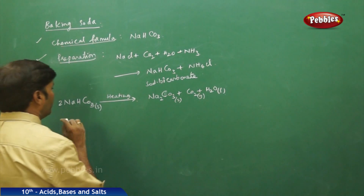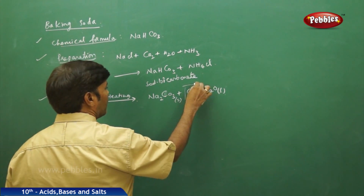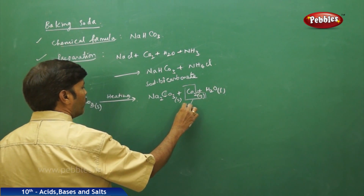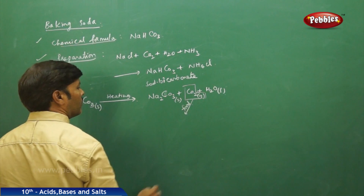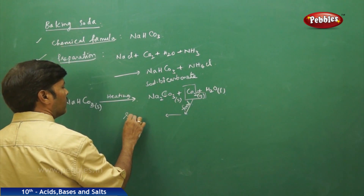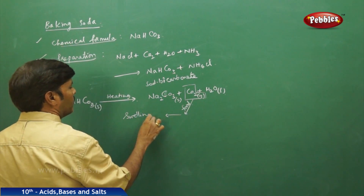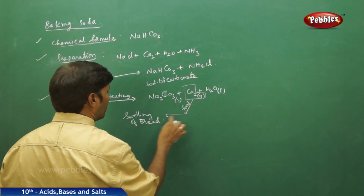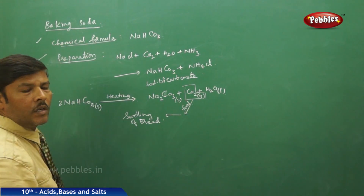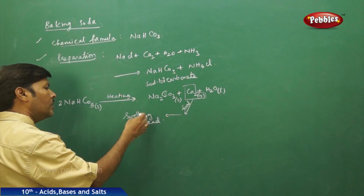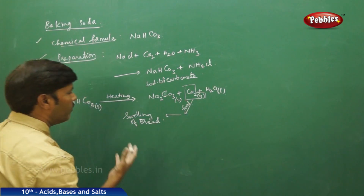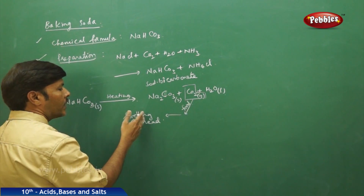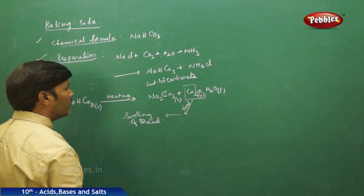We call this compound baking soda because the carbon dioxide obtained, when added to baked food, results in the swelling of bread. The swelling of bread is because of the injection of carbon dioxide into the food. So the volume of the bread appears larger because of the involvement of carbon dioxide in the food stuff.